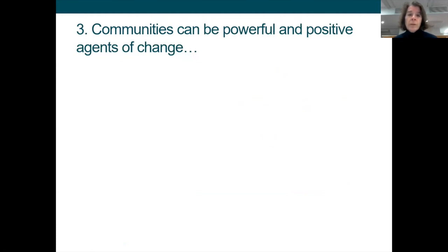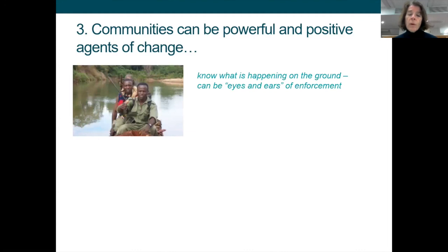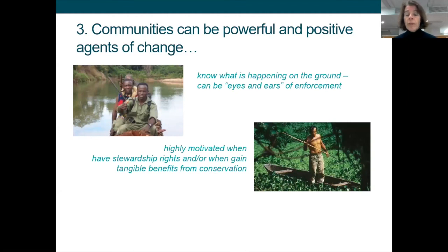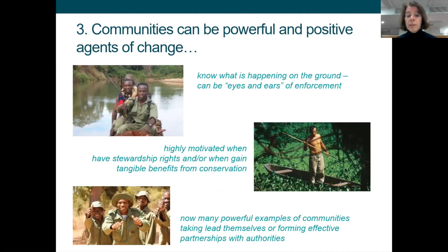On a more positive note, communities can be very powerful and positive agents of change if they are engaged. They know what's happening on the ground because they live near or with wildlife. Just as they can be easily involved in poaching because they know where to find wildlife, they can also be the eyes and ears of law enforcement agencies. They can be highly motivated when they have stewardship rights over land and wildlife, or when they gain tangible benefits from conservation. There are lots of examples of communities taking a lead in tackling illegal wildlife trade or forming effective partnerships with law enforcement agencies.